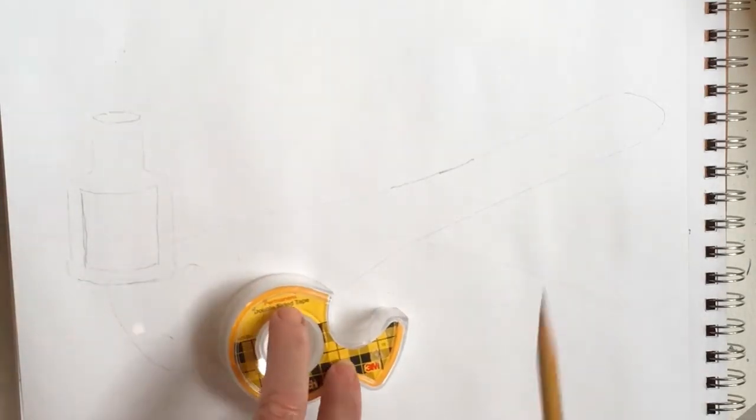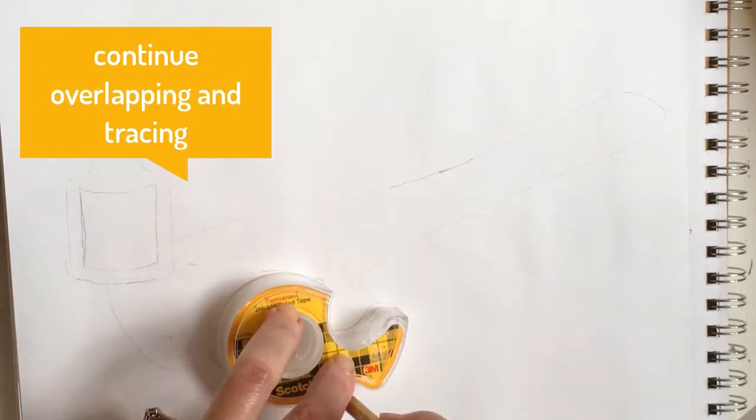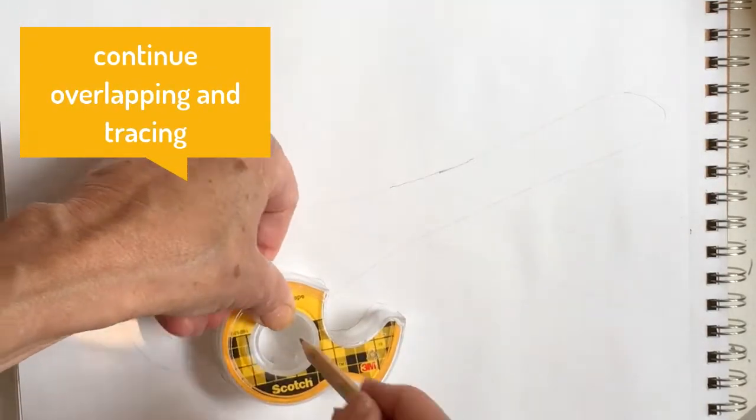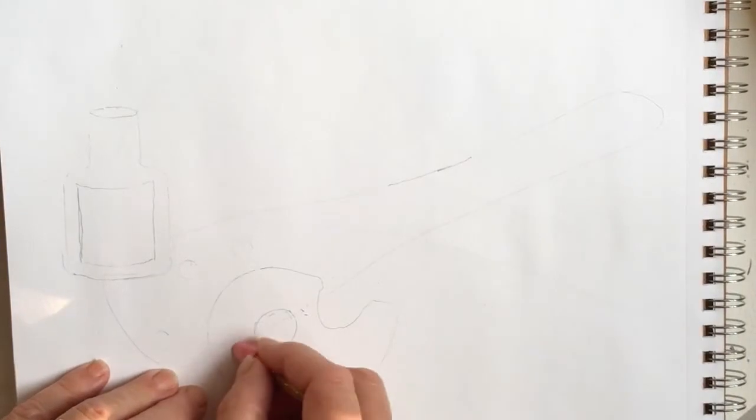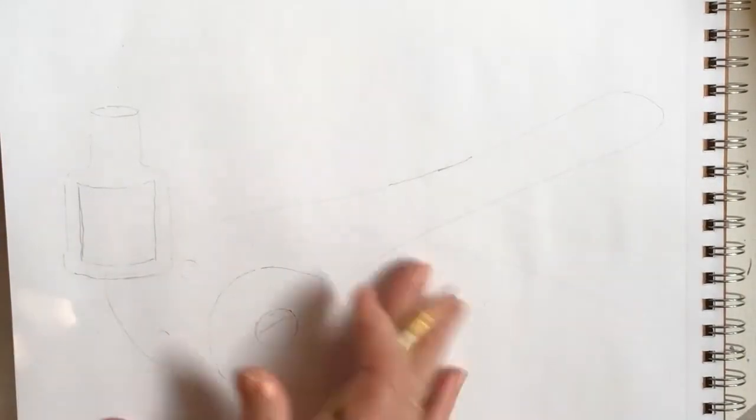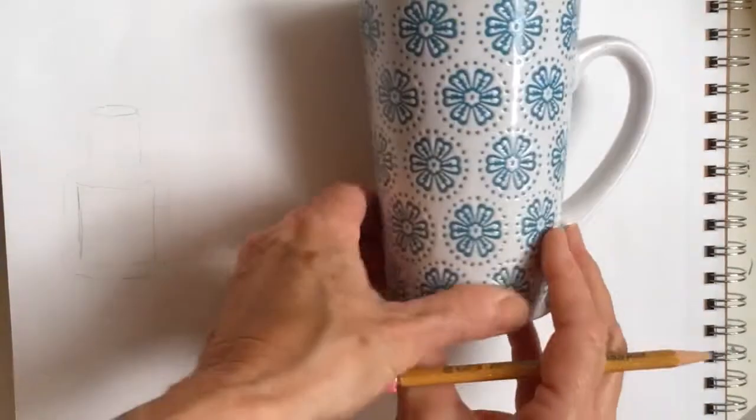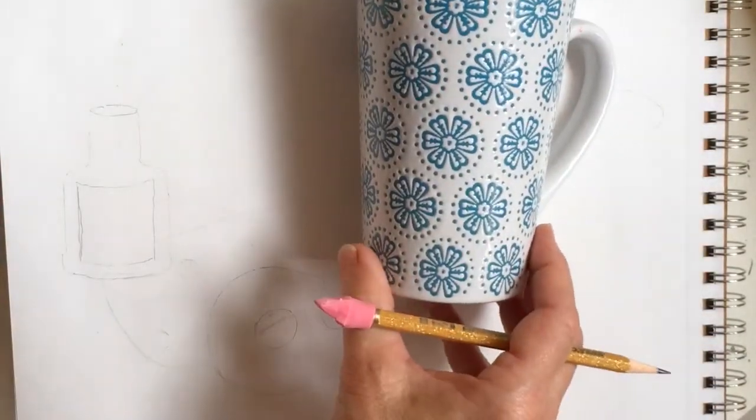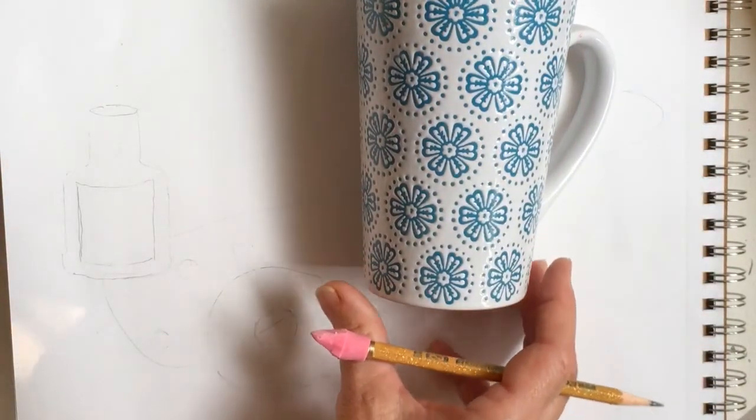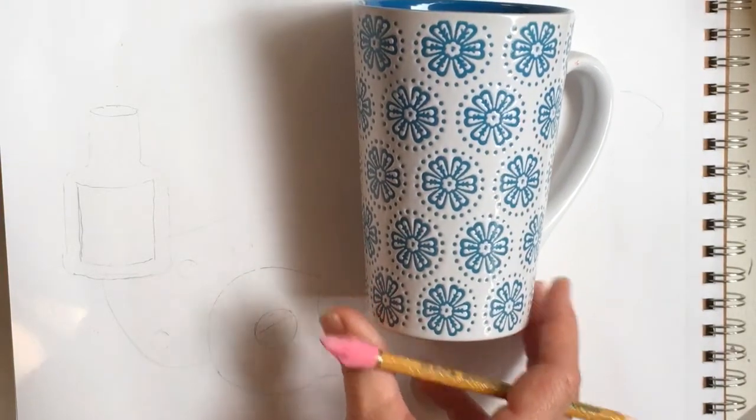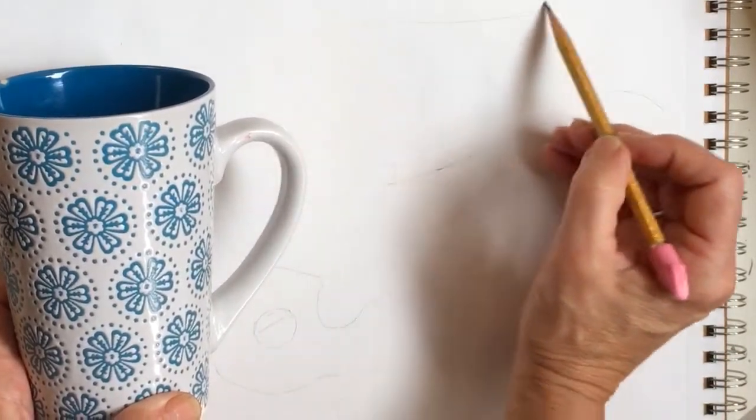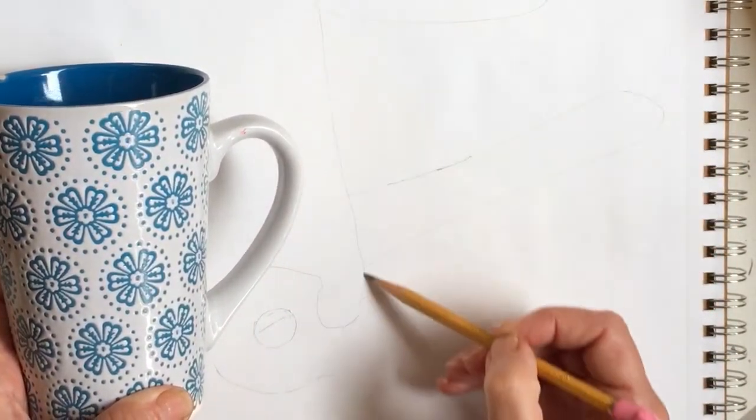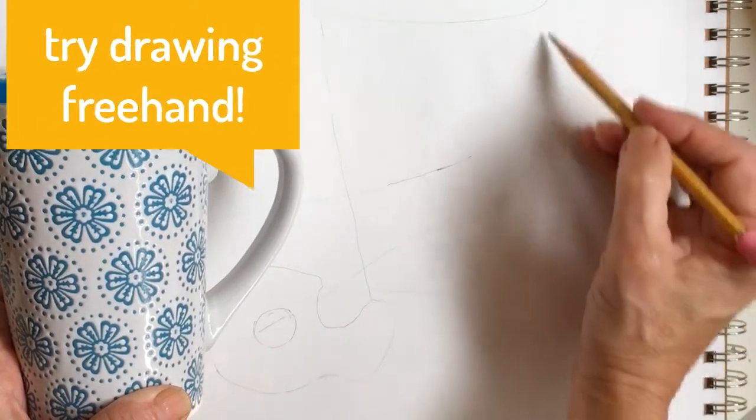Slowly continue to add your objects making sure they're overlapping something else. Some items I find difficult to trace so I draw them freehand. Don't worry if it doesn't come out looking exactly like the object, just do the best you can and have fun.